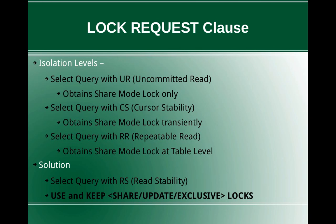There are four isolation levels under which a particular query will run. When we run the select query with uncommitted read isolation level, it will obtain only a shared mode lock, and all the uncommitted changes will be visible to the select query. The second isolation level is cursor stability, where it will again obtain only a shared mode lock, but transiently.